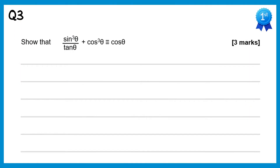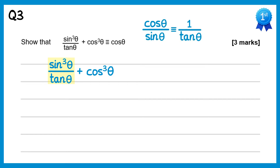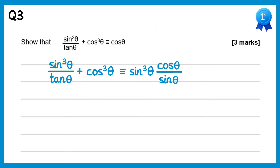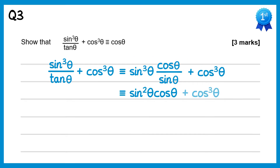For this question we'll write down the left hand side. Looking at the fraction sin³θ over tanθ: we have an identity which says cosθ over sinθ is the same as 1 over tanθ, so we can replace 1 over tanθ with cosθ over sinθ. This gives sin³θ times cosθ over sinθ, plus cos³θ. The sinθ on the bottom cancels with one of the sinθ's on the top, leaving sin²θ·cosθ plus cos³θ.